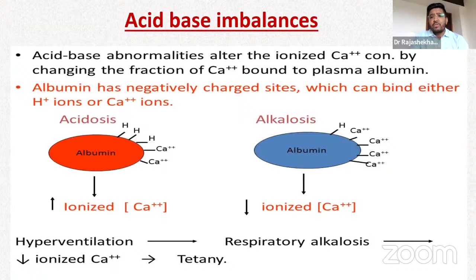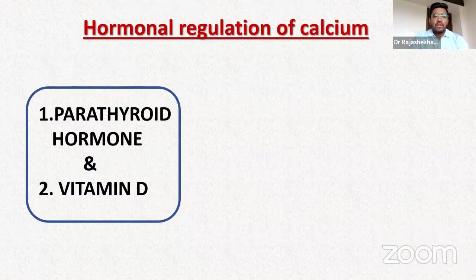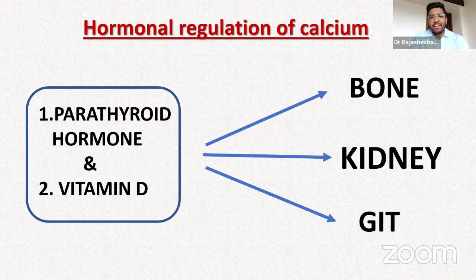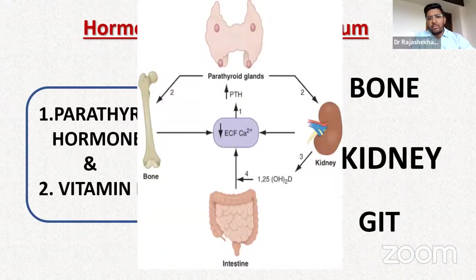The relationship between respiratory alkalosis and tetany is very important clinically and a famous exam question. Acidosis has the reverse effect — it decreases albumin's affinity for calcium, increasing ionized calcium. The most important way calcium is regulated is through hormones — parathyroid hormone and vitamin D — which act on three organs: bone, kidney, and GIT. In low calcium states, PTH is secreted rapidly in response to even a small drop in serum calcium. PTH acts on bone to increase calcium output, on the kidney to increase calcium reabsorption, and indirectly on the GIT through vitamin D to increase calcium absorption.